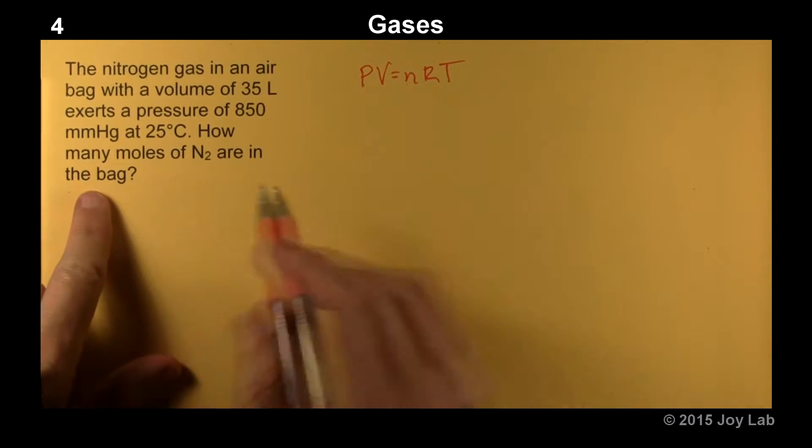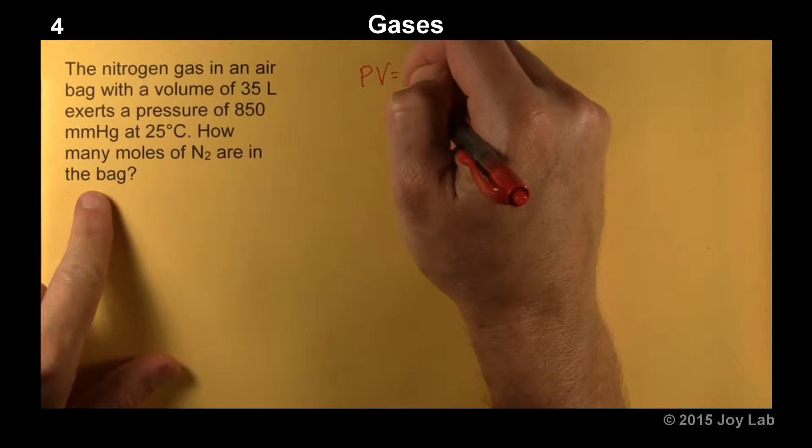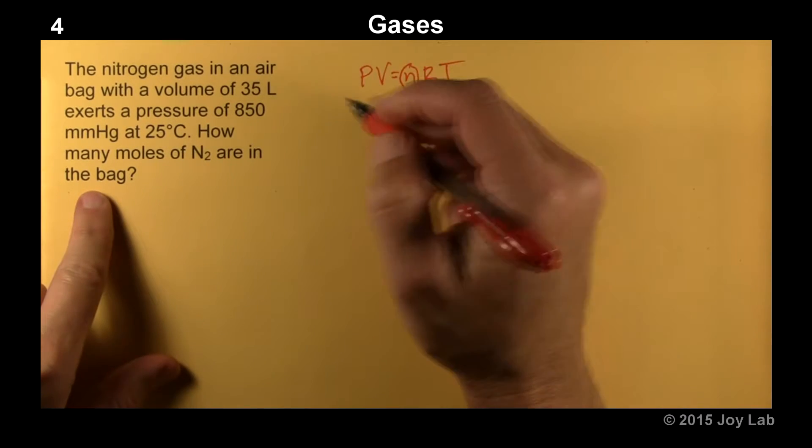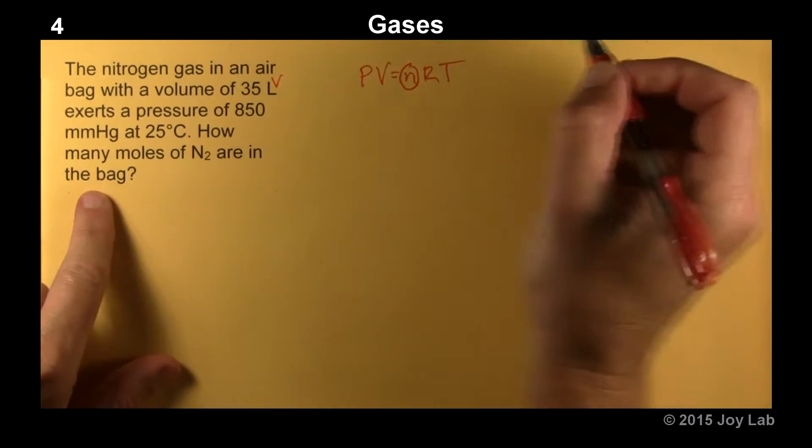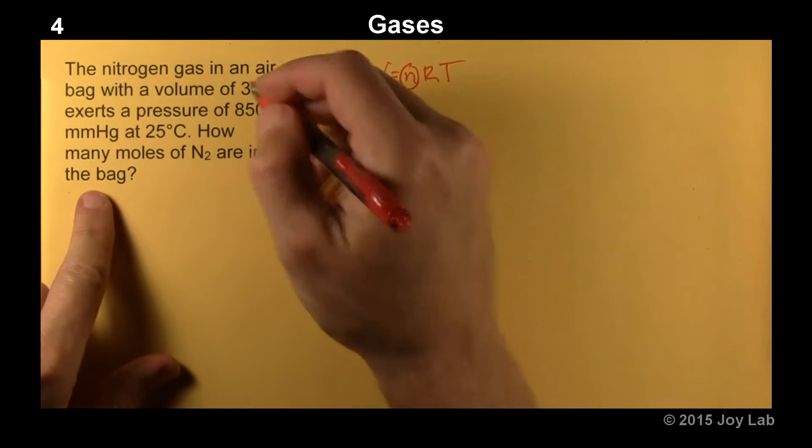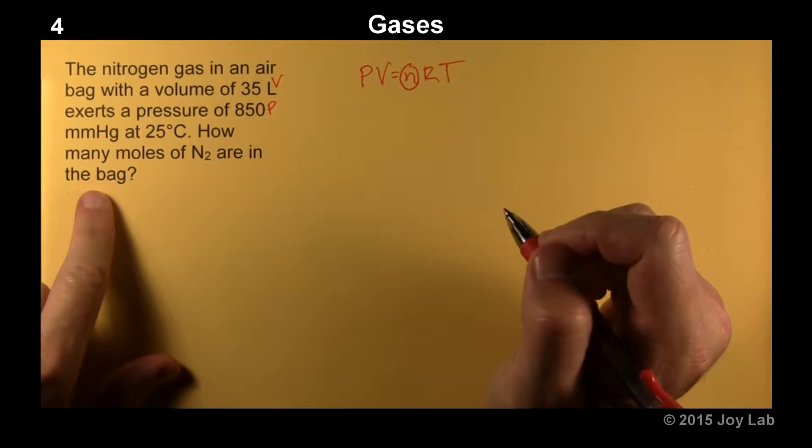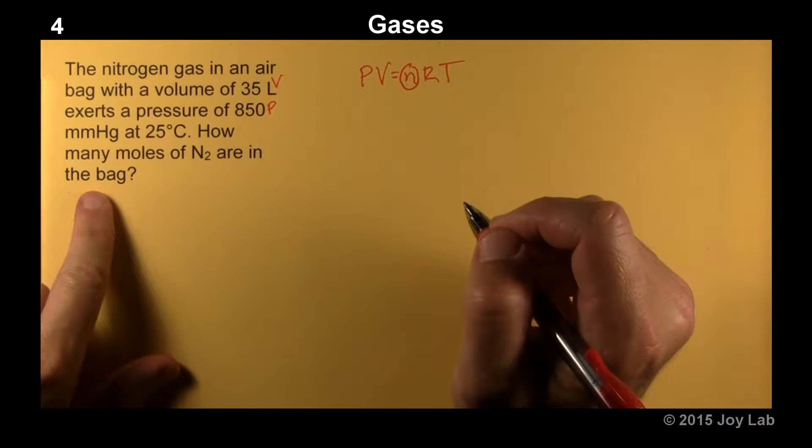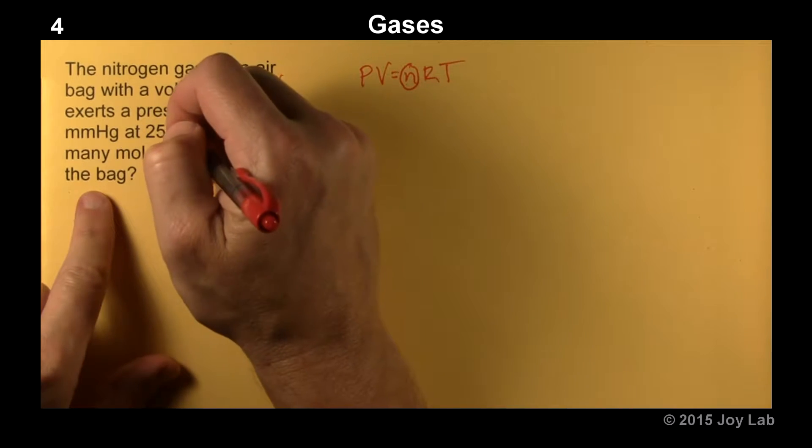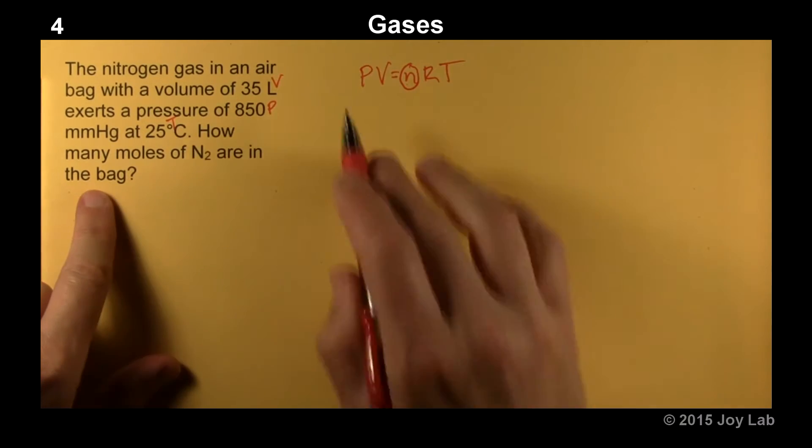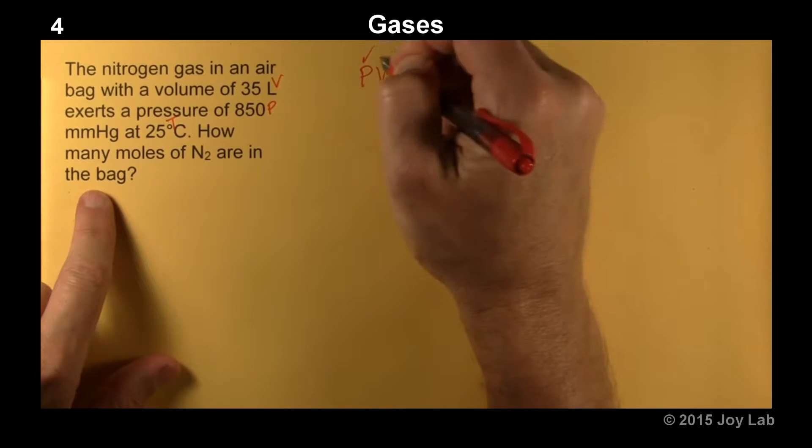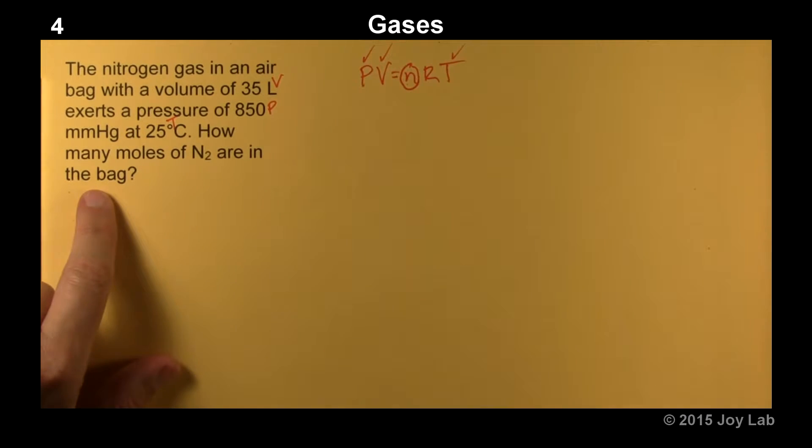So we want to find out how many moles, so we're looking for this. What do we know? Oh, there's our volume. We have a pressure. Oh, here's a pressure. We're going to do some conversion for that pressure. And we have a temperature. So we have everything. We have our pressure, volume, temperature of course. We know R.